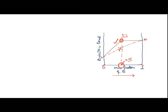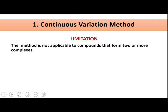The stability constant is calculated using the same formula: K = [MA]ⁿ / ([M] × [A]ⁿ). Please note it is not necessary that the curve always appears above the predicted dotted line — in some cases the curve can be below it, depending on the properties of the complex. This method has only one limitation: it is not applicable to compounds that form two or more complexes. It is the simplest method.